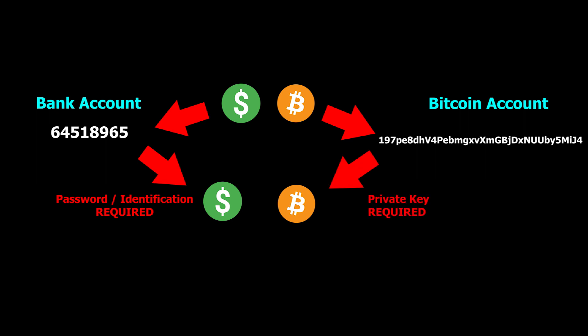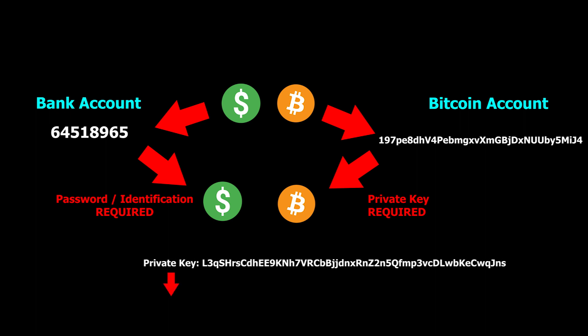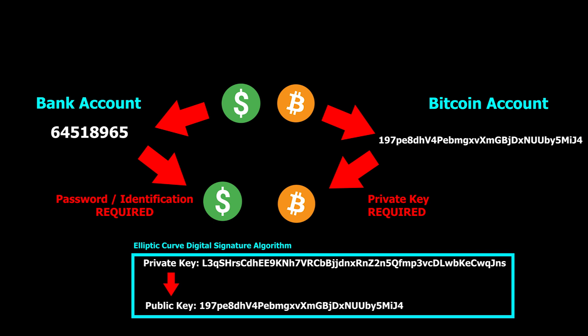A private key and public key go hand in hand. The way Bitcoin works is it creates a private key first, and from this makes a public key — think of this as you creating an online password first, which your bank then uses to generate your bank account number. It uses something called the elliptic curve digital signature algorithm. This is quite complicated as it requires modular arithmetic, and exactly how it works is beyond the scope of this video. A concern one may have is: if you have someone's public key, couldn't you just reverse engineer and get the private key? The answer is yes, but it is extremely difficult — so difficult it is said to be impossible.